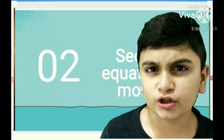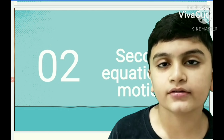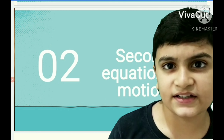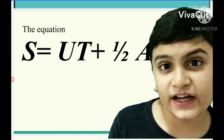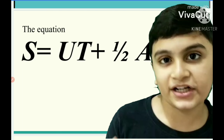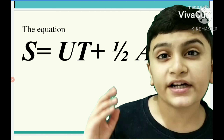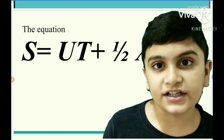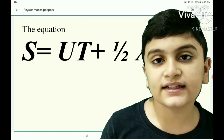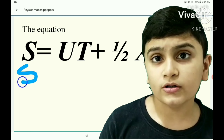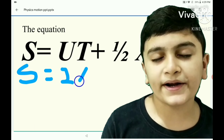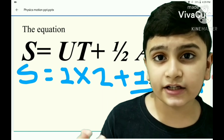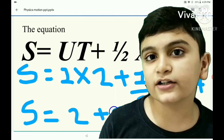Now the second equation of motion. This is a complex but easy equation. It tells us the displacement from initial velocity, time, and acceleration. The formula is S is equal to Ut plus half At squared — displacement equals initial velocity into time plus half the acceleration into time squared. For example, if the initial velocity is 1, time is 2 seconds, and acceleration is 4 m/s²: S equals 1 into 2, which is 2, plus half into 4 into 2 squared, which is 8. So 2 plus 8 equals 10. Therefore, 10 meters is the displacement.